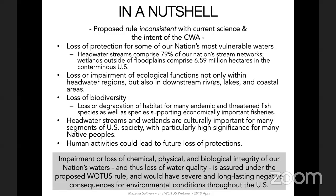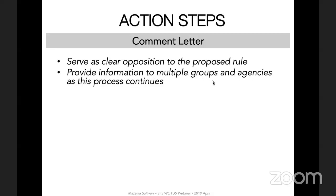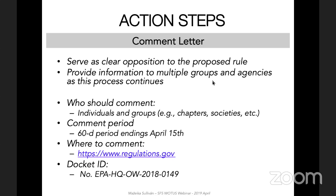The proposed rule seems to leave the door open for human activities to lead to future loss of protections. To conclude, impairment or loss of chemical, physical, and biological integrity of our nation's waters — in other words, loss of water quality — is assured under the proposed rule, and would have severe and long-lasting negative consequences for environmental conditions throughout the U.S. I'd like to close by discussing a few action steps you or your group can take. A comment letter can serve as clear opposition to the U.S. EPA and Army Corps concerning the proposed rule. Comment letters can also be used later in the process, as this is likely to play out for quite some time, providing useful information to groups and agencies opposing the rule down the road.